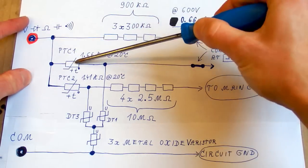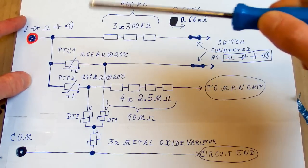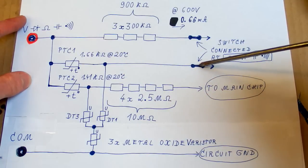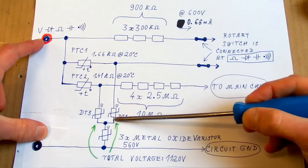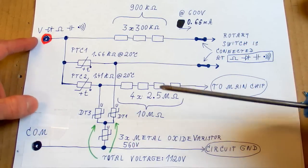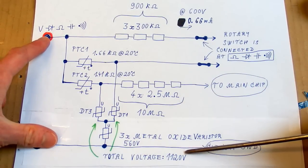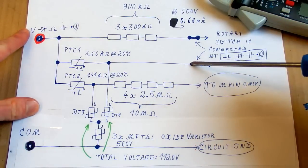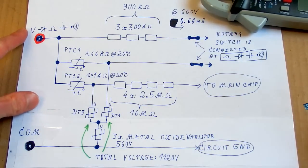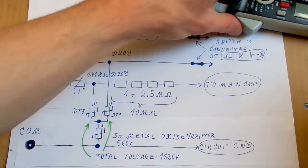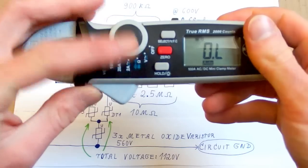Another rail goes via this PTC thermistor, which has about 1.6 kilo ohms at room temperature. And it goes to the switch as well as this one. And here it's protected by metal oxide varistors, which are 560 volts each. But they are always two in series, so the total voltage is 1120 volts. Those two rails go into the rotary switch, which has about seven positions and several poles. Those two are only connected when the switch is in this position. For resistances, diodes, capacitors and a conductivity test. In all other positions, those two are disconnected.